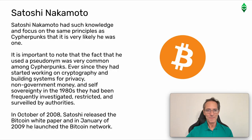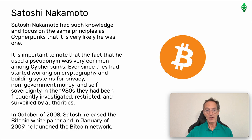Satoshi Nakamoto had such knowledge and focus on the same principles as cypherpunks that it is very likely he was one. It is important to note that the fact that he used a pseudonym was very common among cypherpunks. Ever since they had started working on cryptography and building systems for privacy, non-government money, and self-sovereignty in the 1980s, they had been frequently investigated, restricted, and surveilled by authorities. In October of 2008, Satoshi released the Bitcoin white paper, and in January of 2009, he launched the Bitcoin network.